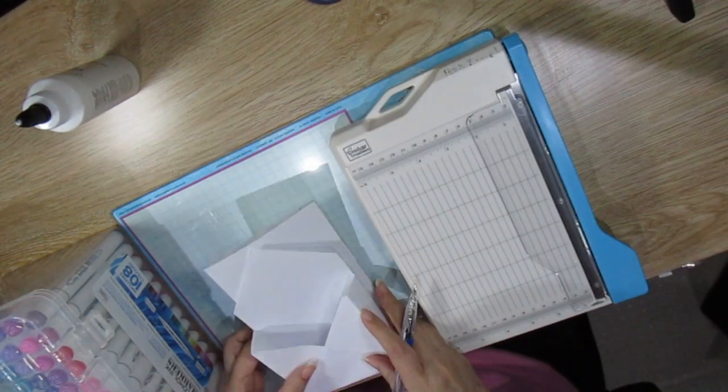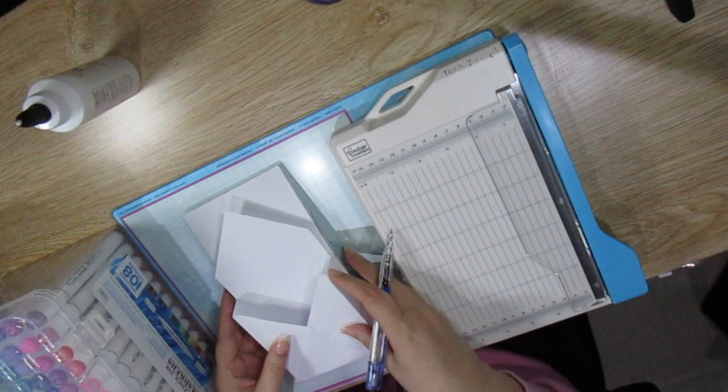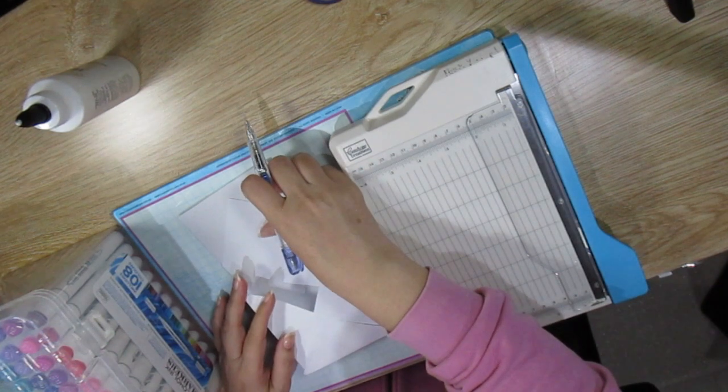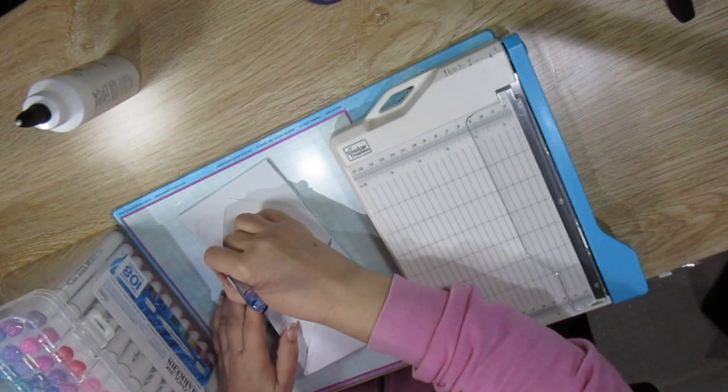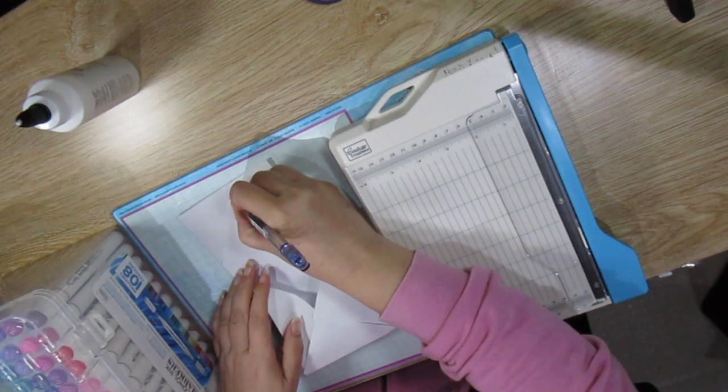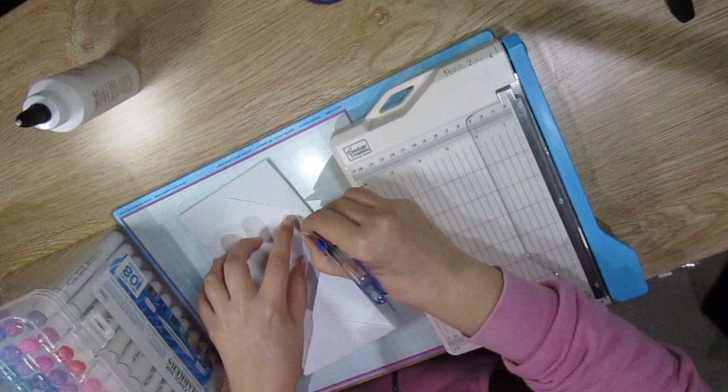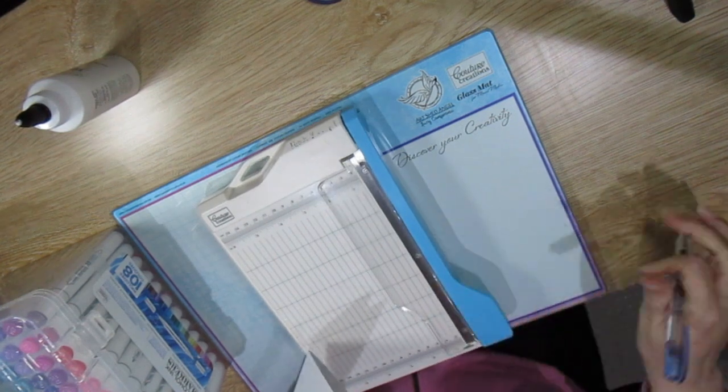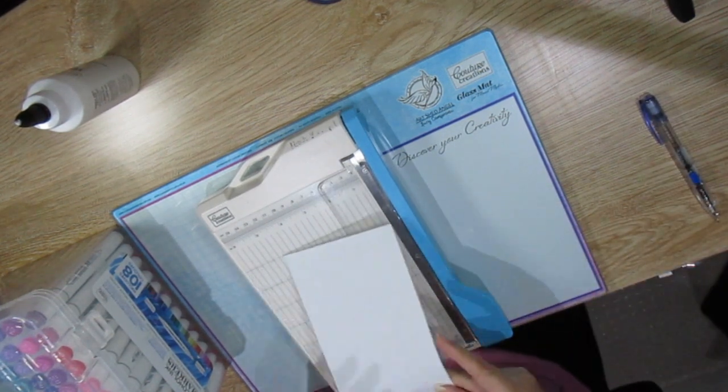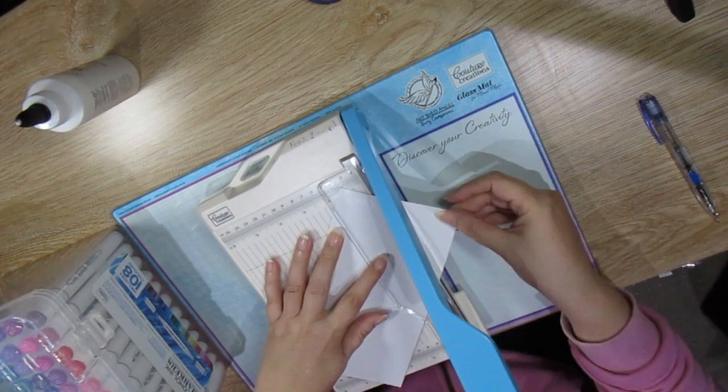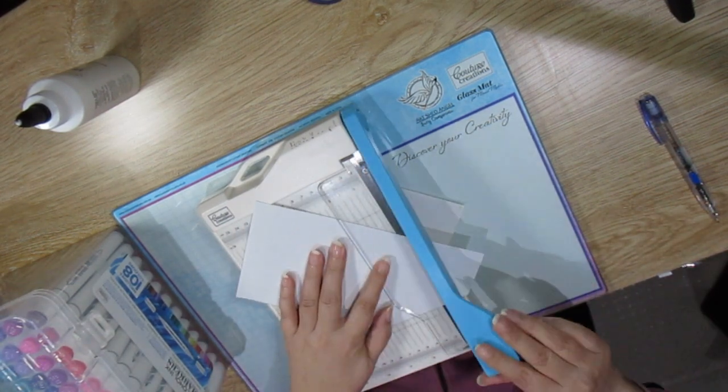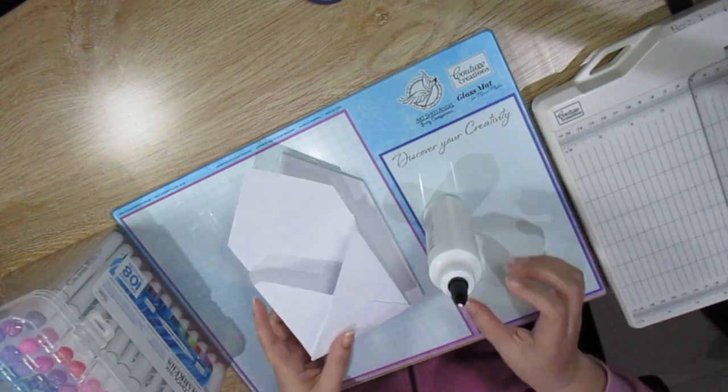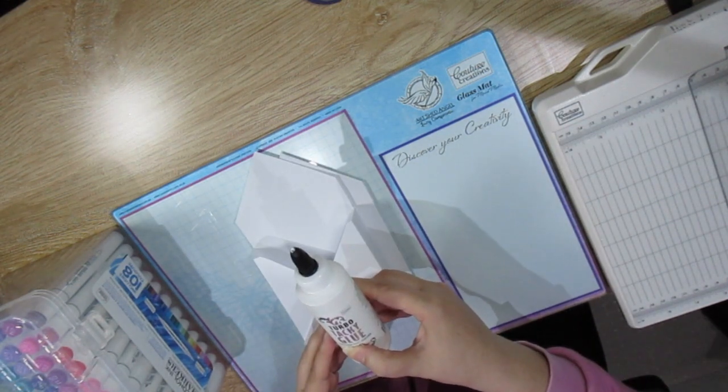Now I'm just going to use a pencil and just see where I need to cut it. So I'm just going to make a measurement there and there, there, there, and there. I'm going to cut it with a Kachur Creation guillotine. And now all that you need to do is to adhere this envelope box onto your card base. I'm going to use the Kachur Creations turbo tacky glue.